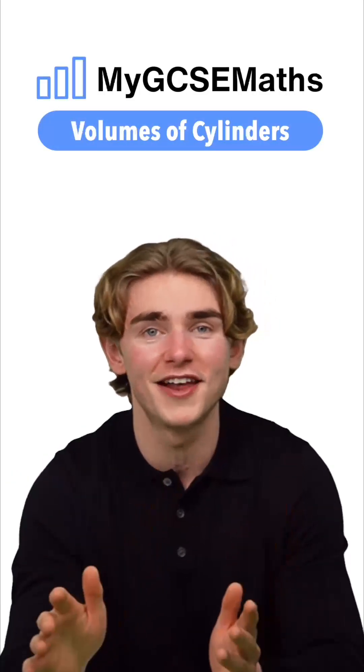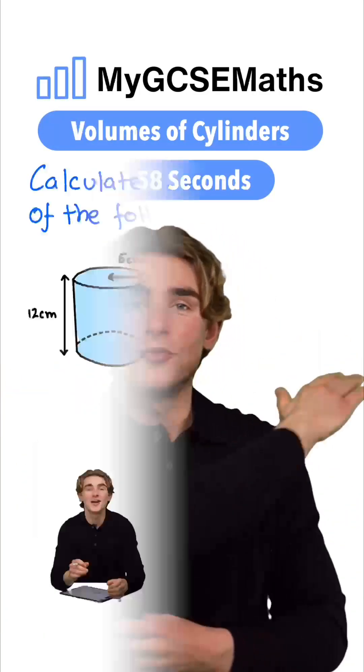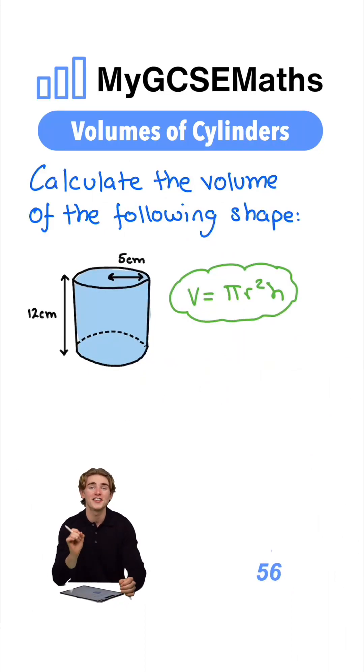How to calculate the volume of a cylinder in 58 seconds. Let's go. To calculate the volume of a cylinder, we're going to use the formula V = πr²h.